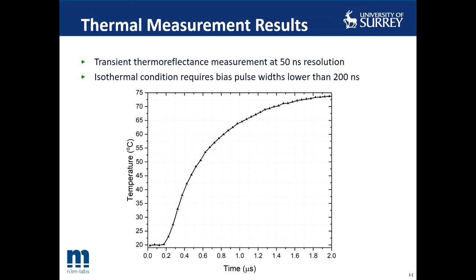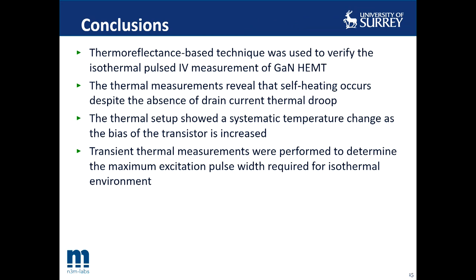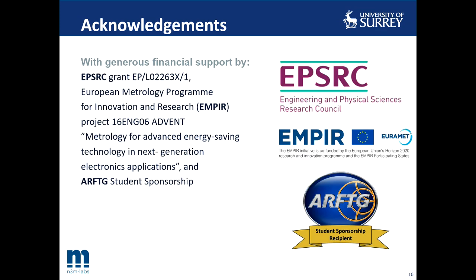Unfortunately, 200 nanoseconds was beyond the capability of the measurement setup used, so we were unable to perform a post-IV measurement to see if there are any differences in the IV curves. As conclusions: the thermoreflectance-based technique was used to verify the isothermal condition of post-IV measurements of a gallium nitride high electron mobility transistor. Thermal measurements revealed that self-heating occurs despite the absence of drain current thermal droop. The setup also showed a systematic temperature change as transistor bias is increased, and transient thermal measurements determined the maximum excitation pulse width required for an isothermal environment. We thank EPSRC, and specifically the ADVENT project and RF-TAC, for their generous financial support.